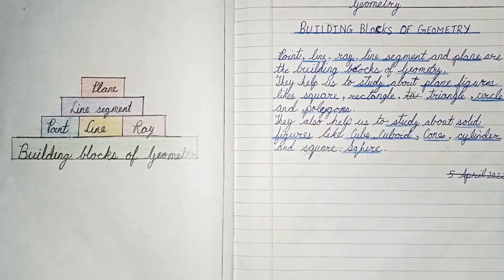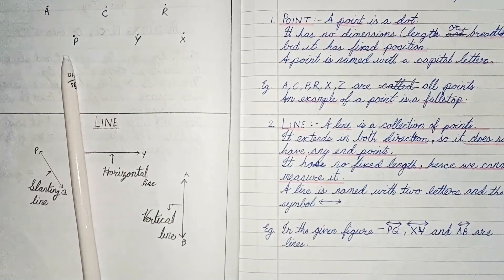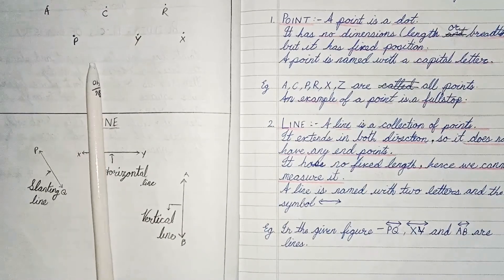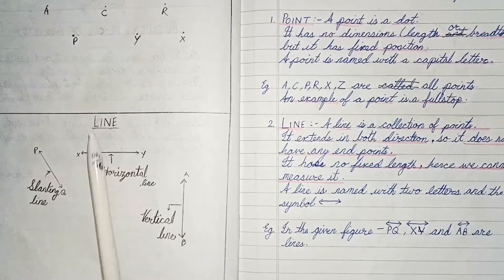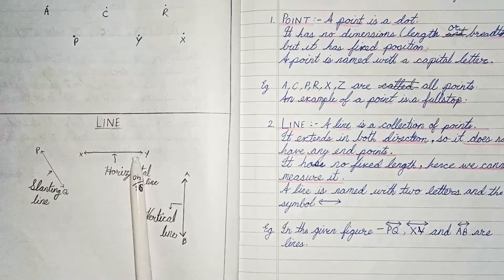Firstly, what is a point? A point is a dot. It has no dimensions but it has a fixed position. Next, what is a line? A line is a collection of points. It extends in both directions.